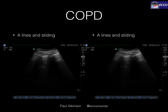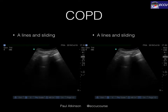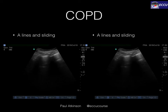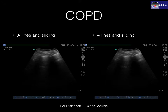In COPD, you will see lung sliding — the pleural sliding, the bright white line that can be seen between ribs at the top of the screen. This would be seen bilaterally and in all zones of the chest. You may also see a reverberation artifact or A-line, and again, this is not abnormal.